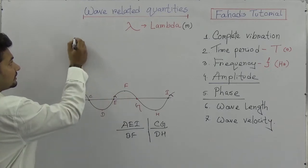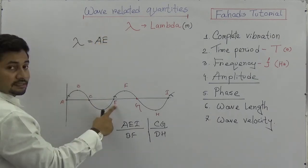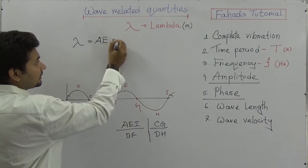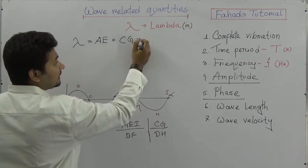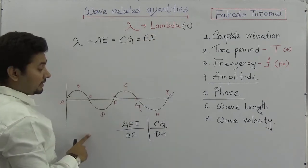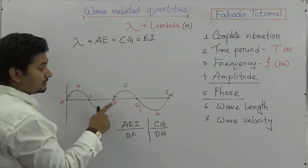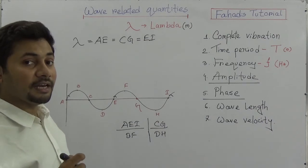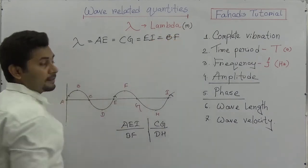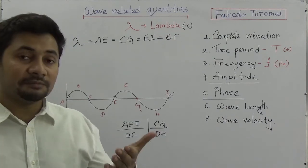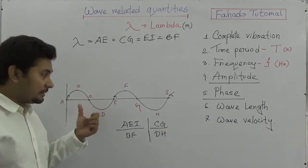So lambda — if I say lambda, that is the distance from A to E, that length is lambda. Or even C to G is another wavelength, or E to I is another wavelength. So A to E, E to I, and C to G are all wavelengths because they represent the distance between two similar phases. Even B to F is a wavelength. We must recognize what is the wavelength of a wave when data is given in a question.